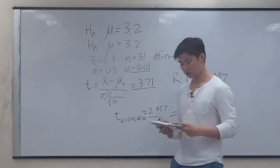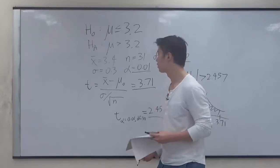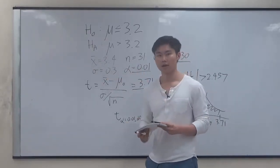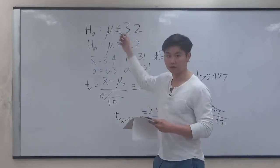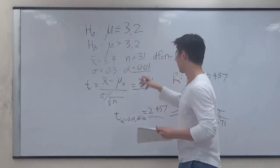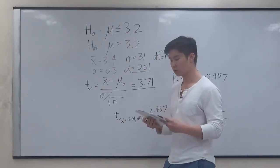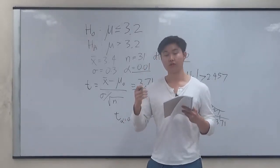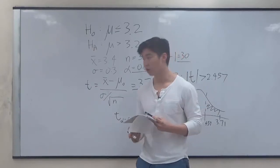So we can conclude that there is a statistically significant difference between our sample and the claim, the given mean, at an alpha value of 0.01. So we can say that it is in the rejection region, we can reject the null hypothesis.